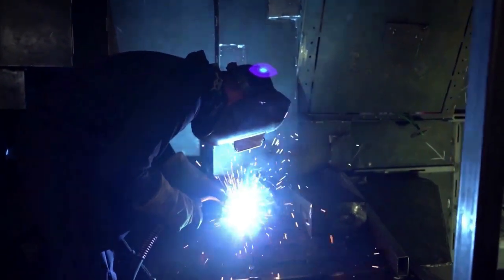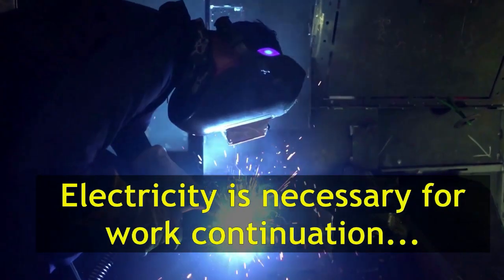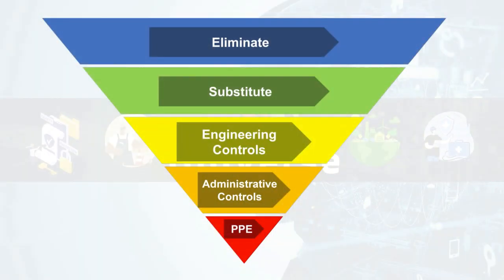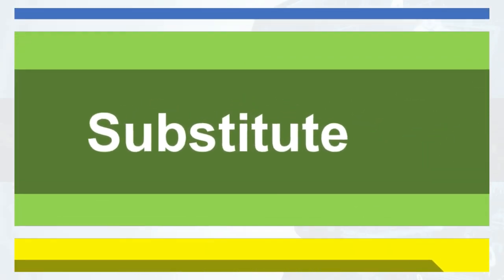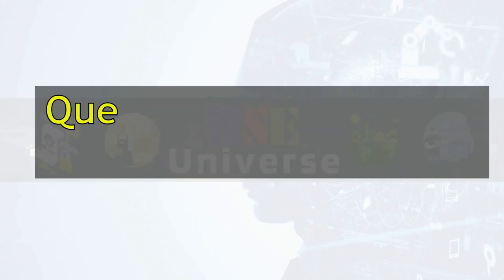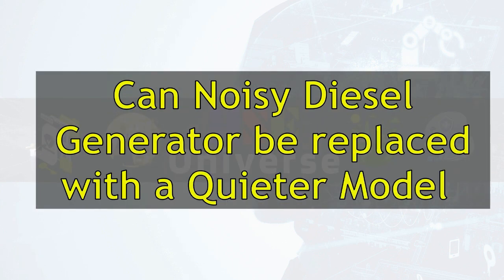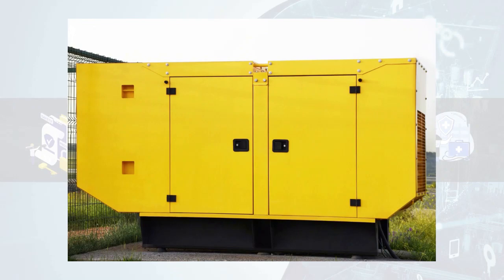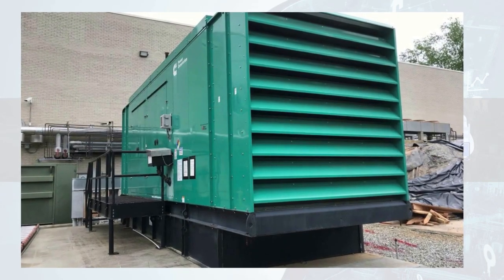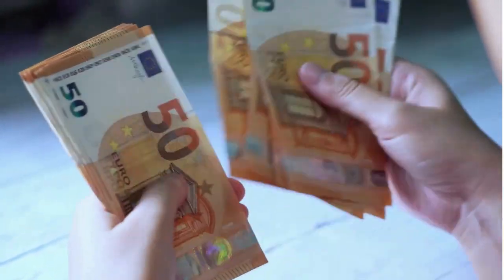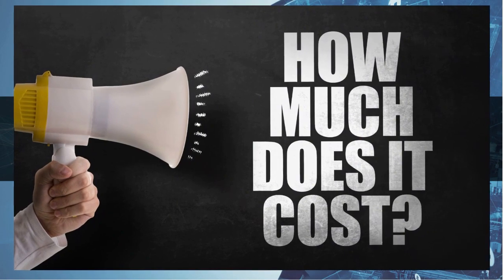If as a group you conclude that the generator is necessary for routine work and cannot be removed — meaning noise cannot be eliminated from the source — then you move to the next control in the hierarchy: Substitution. Here, the question is: can you replace the noisy diesel generator with a quieter model that performs the same task effectively? Nowadays several models of generators are available which produce less noise than the recommended occupational noise exposure limit — these are also called silent generators. You need to consider the cost impact for replacement while determining this as a feasible control.